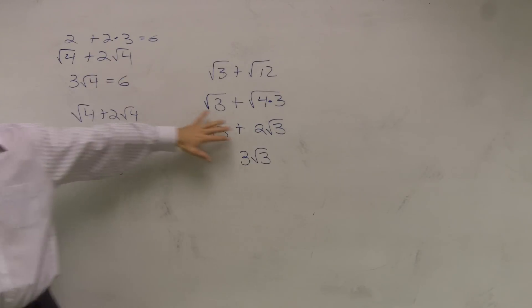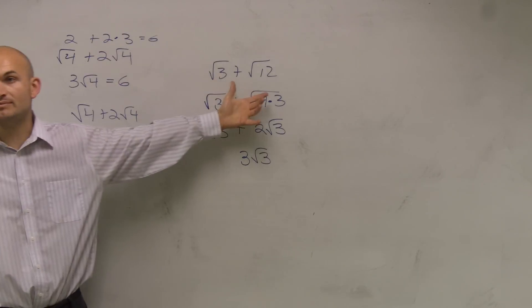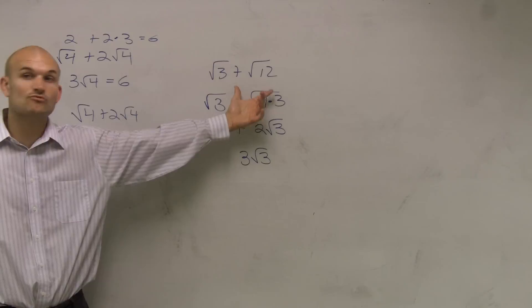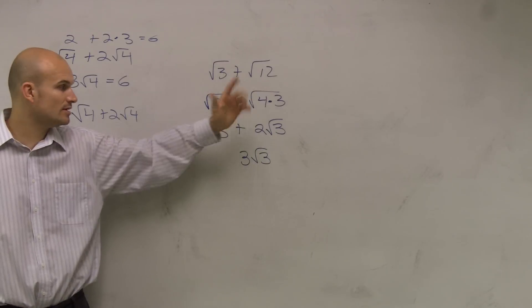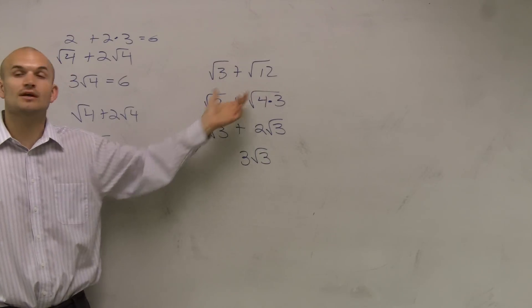So just remember, when you're adding your radicals, what you're going to want to do is make sure you simplify them to get them to be the same radicand, the number under the square root. And when you have them as the same, you can combine them.